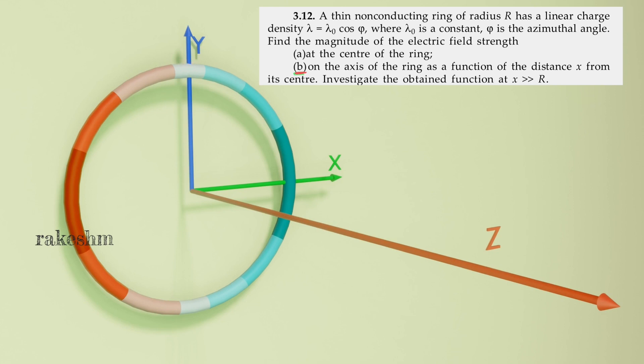As the linear charge density is varying, we need to take a small charge dq here, find the field due to this dq at x and then integrate.